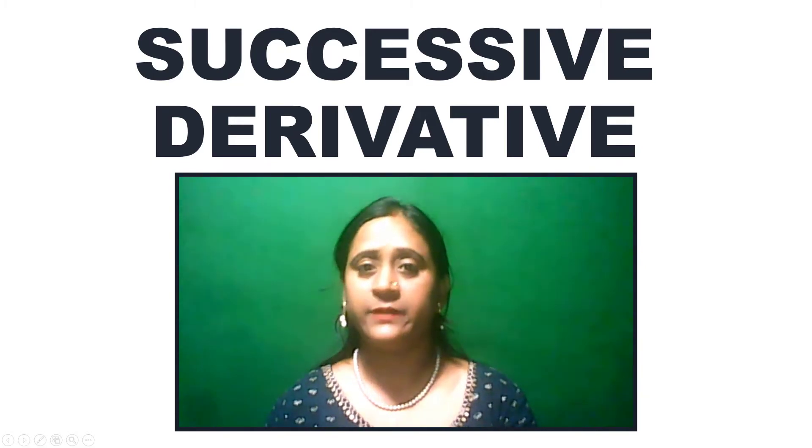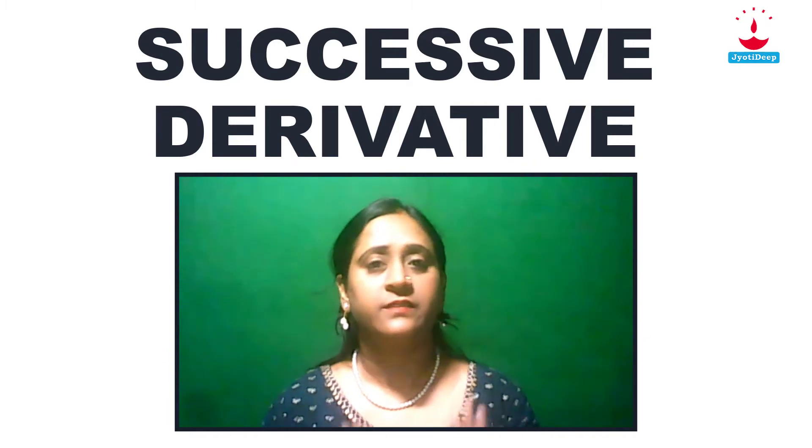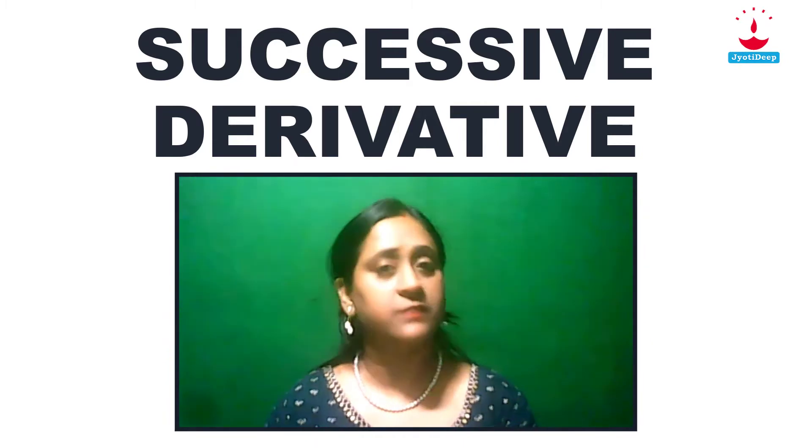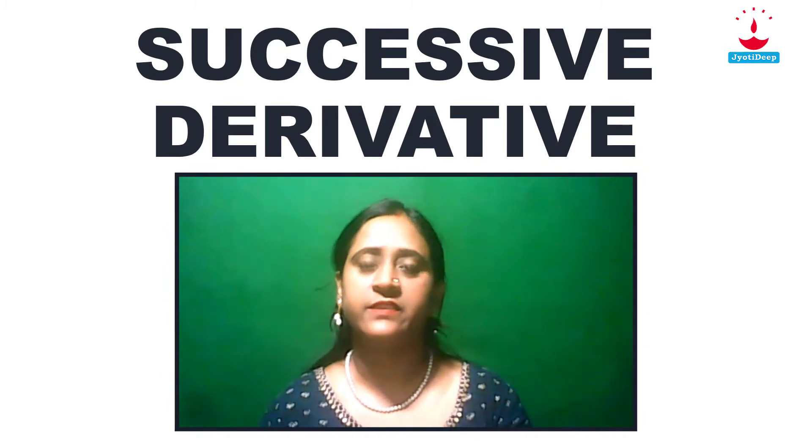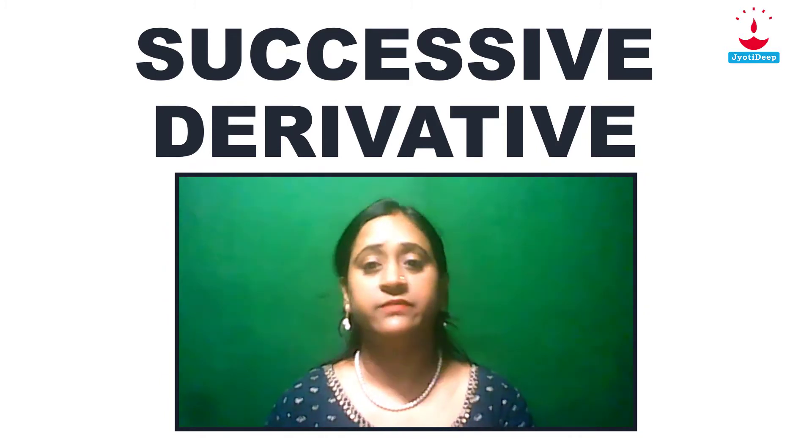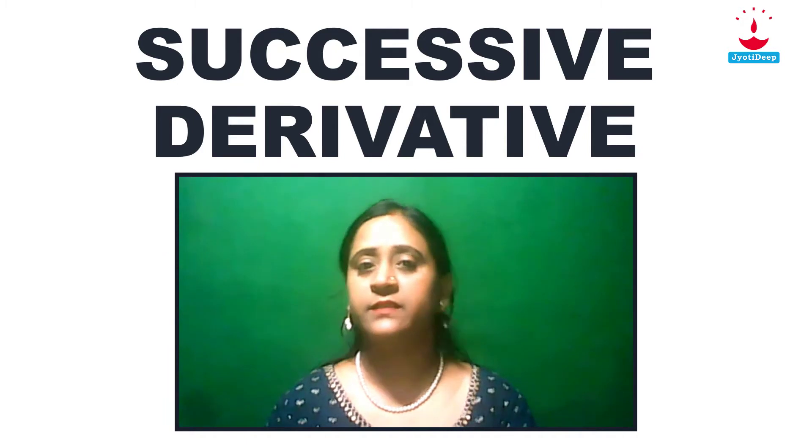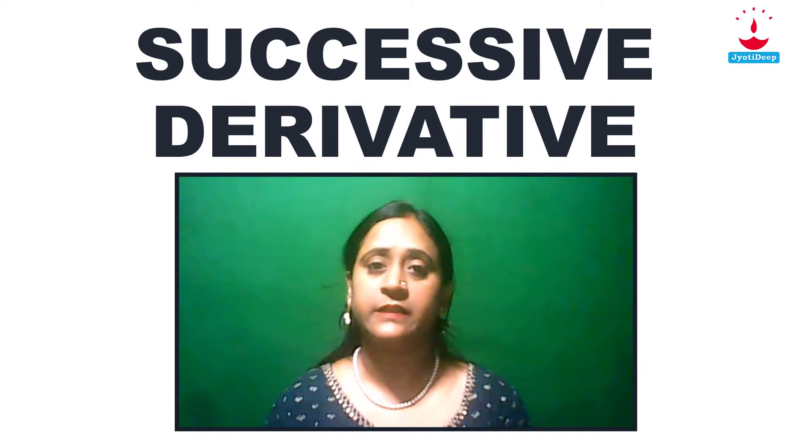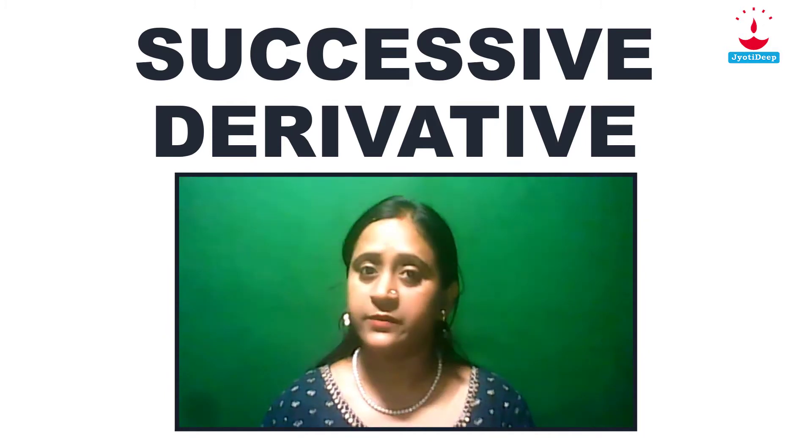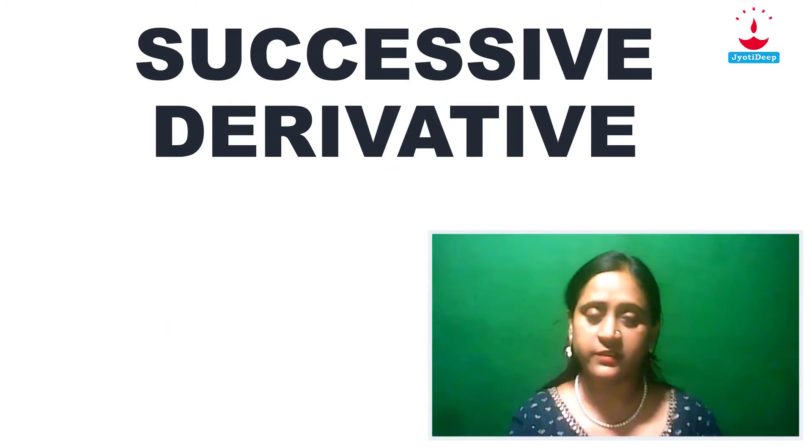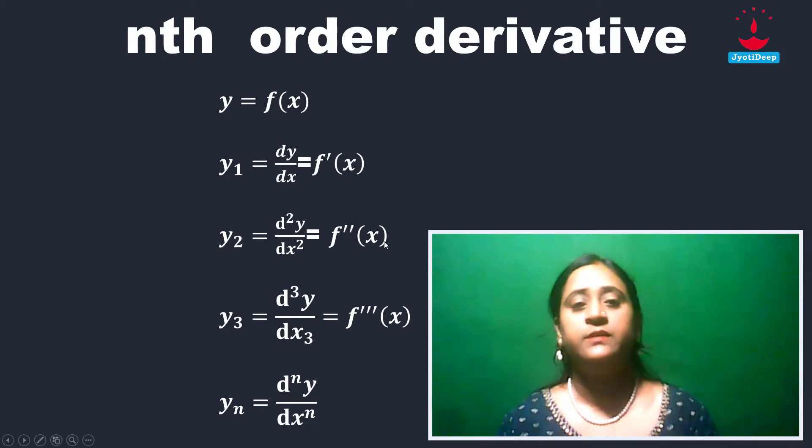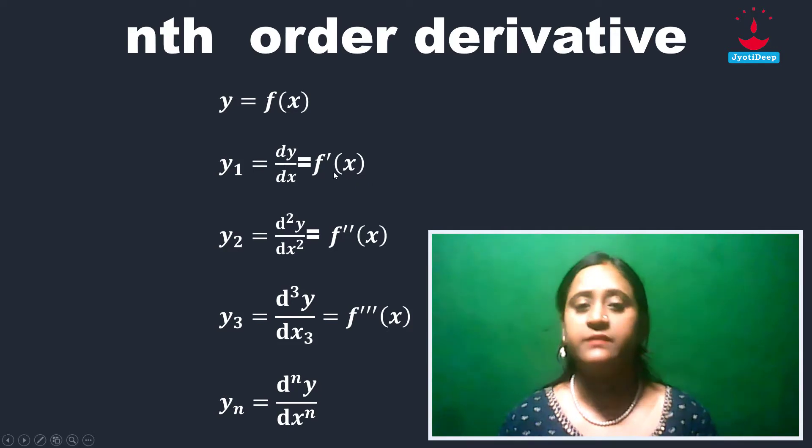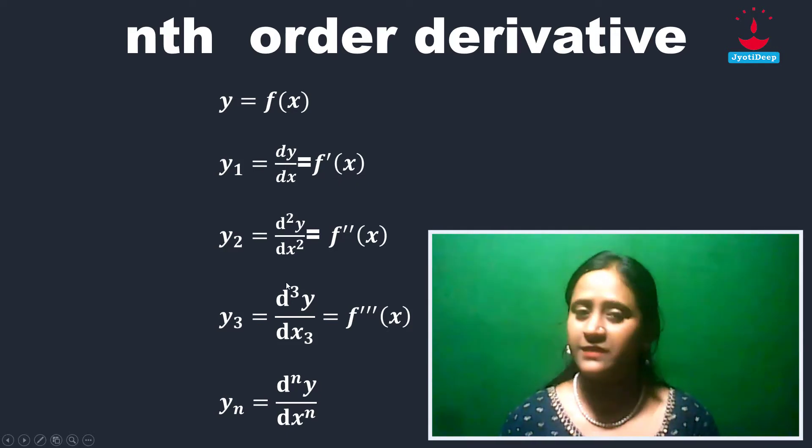Derivative here mean kye? D y by d x. Right. To eta kye aamra y1 d e denote kuhi. That means first order derivative. To first order derivative hache y1. That is d y by d x. That means f dash x.